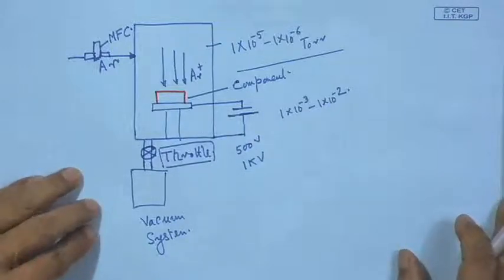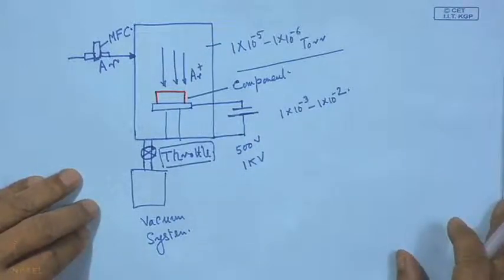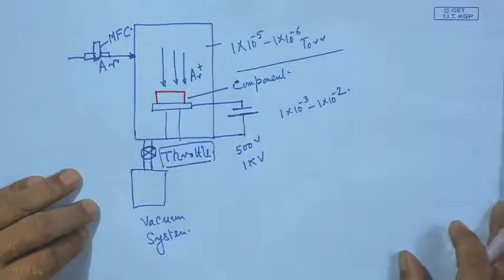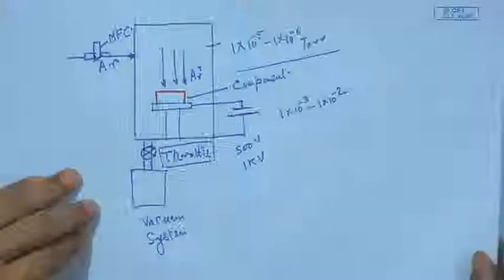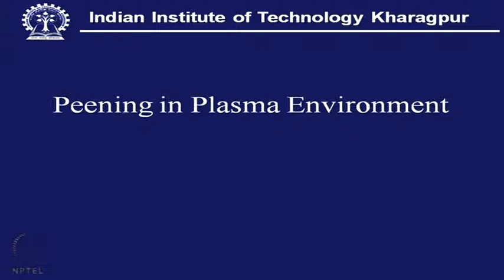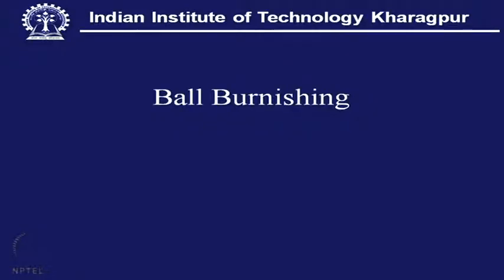This is a refined way of performing shot peening — using a plasma environment or with the assistance of argon ions. Next comes the mechanical process of ball burnishing.